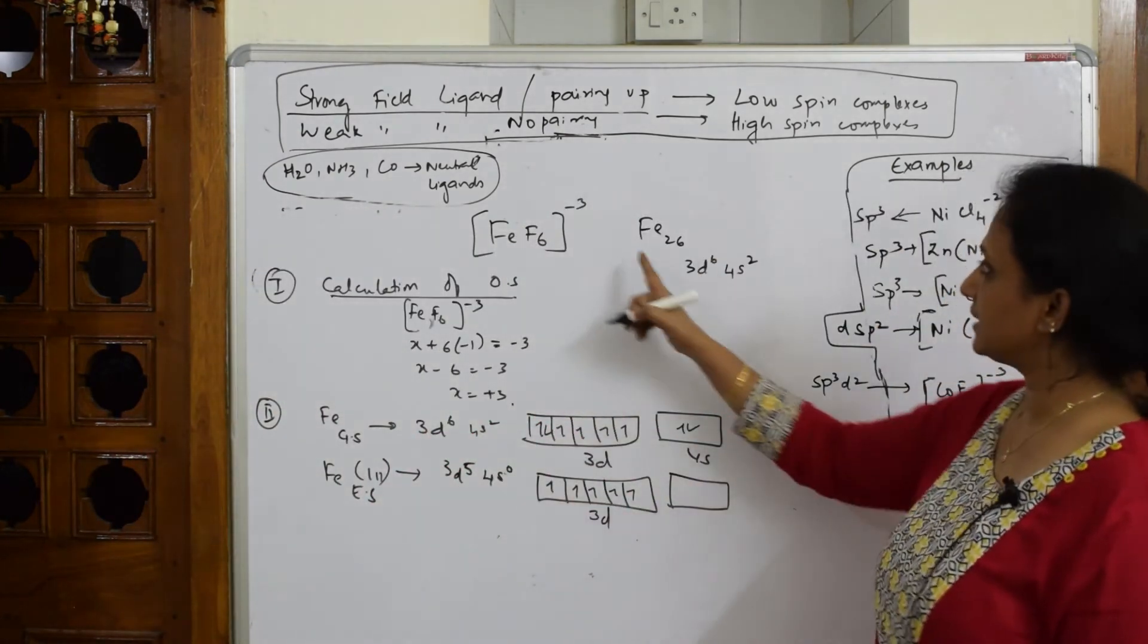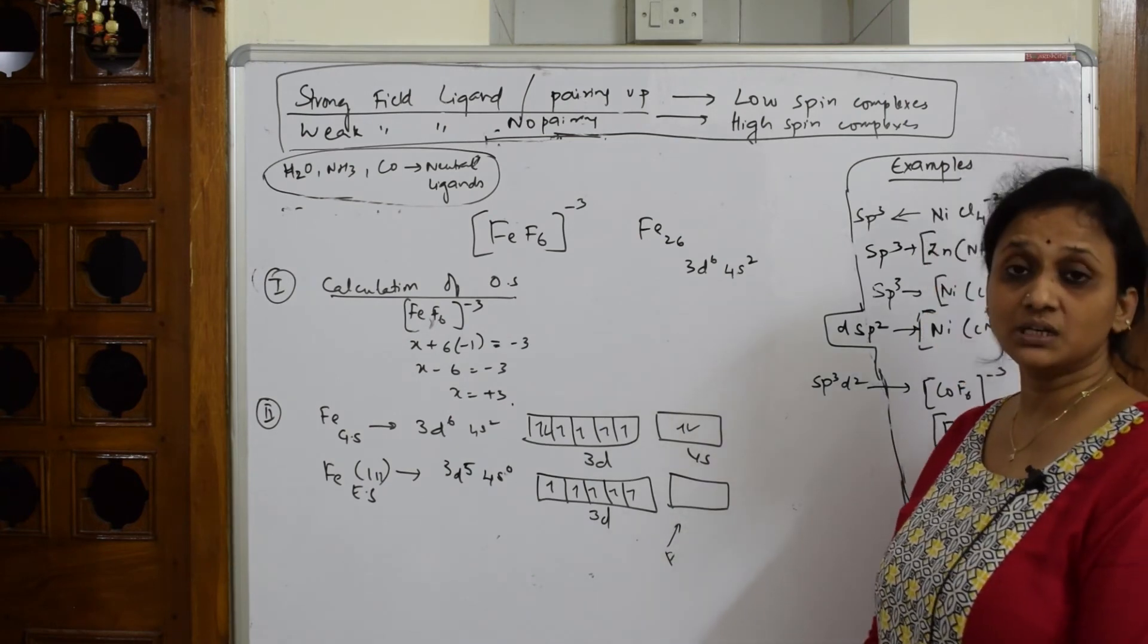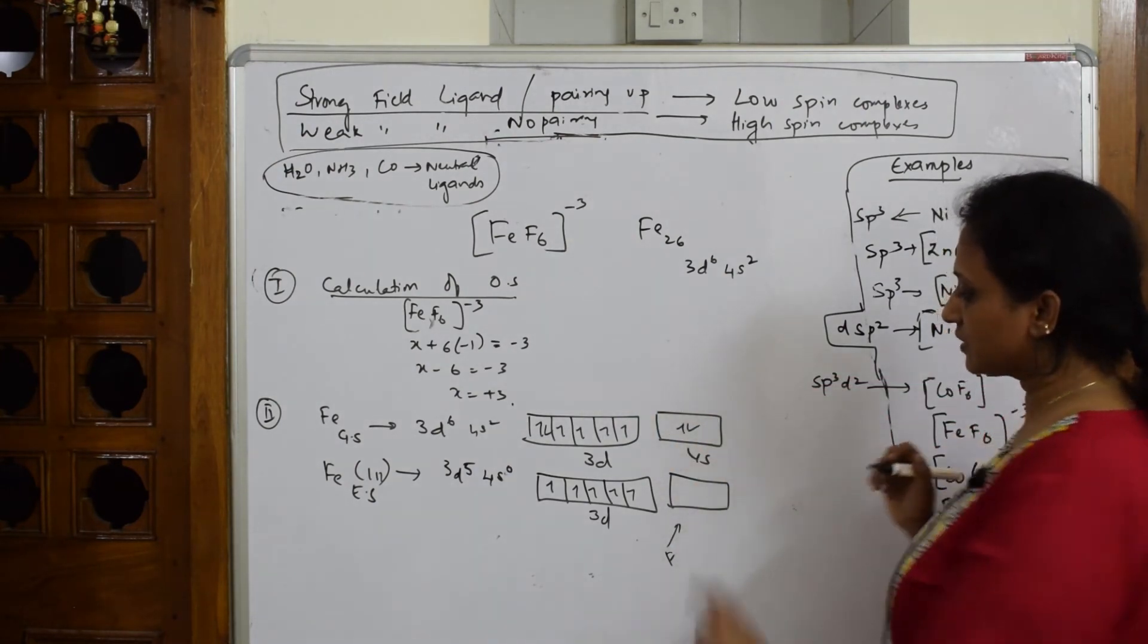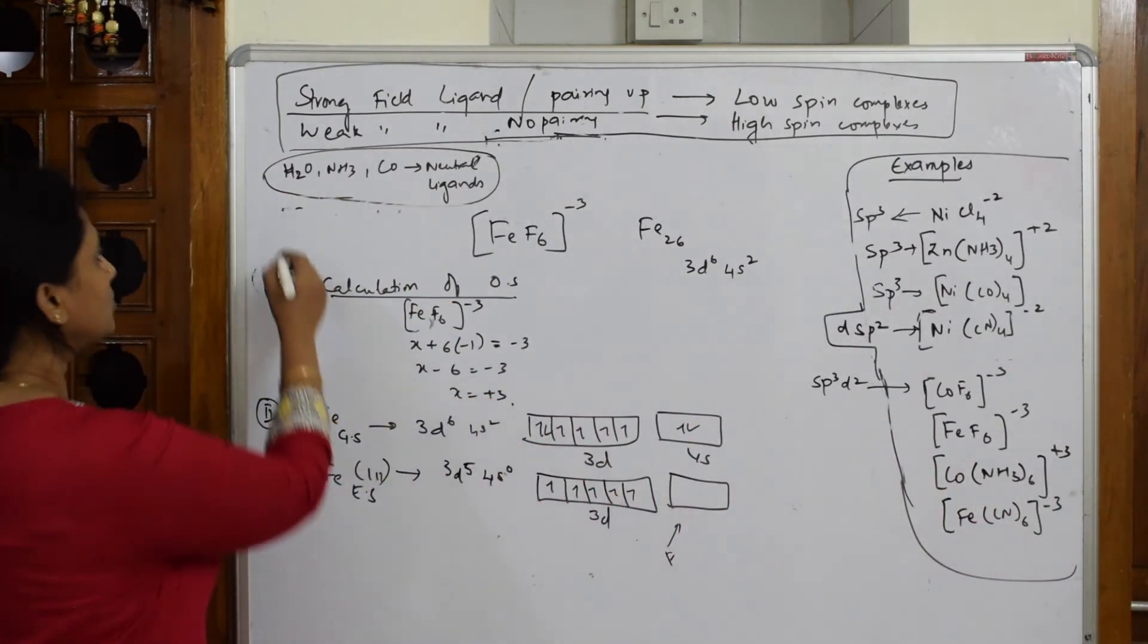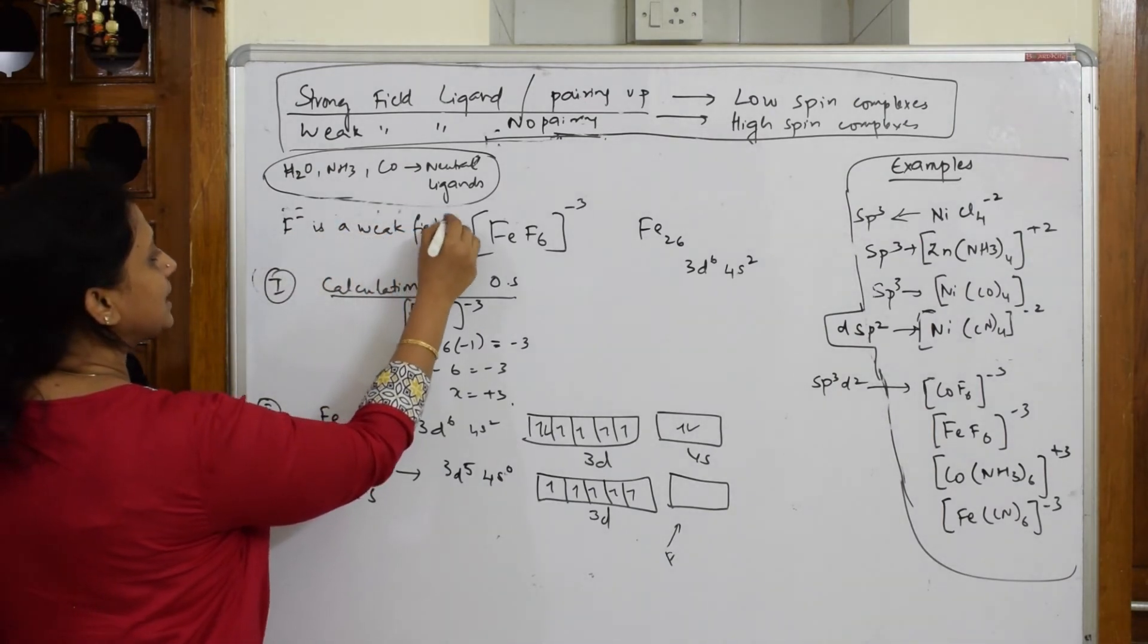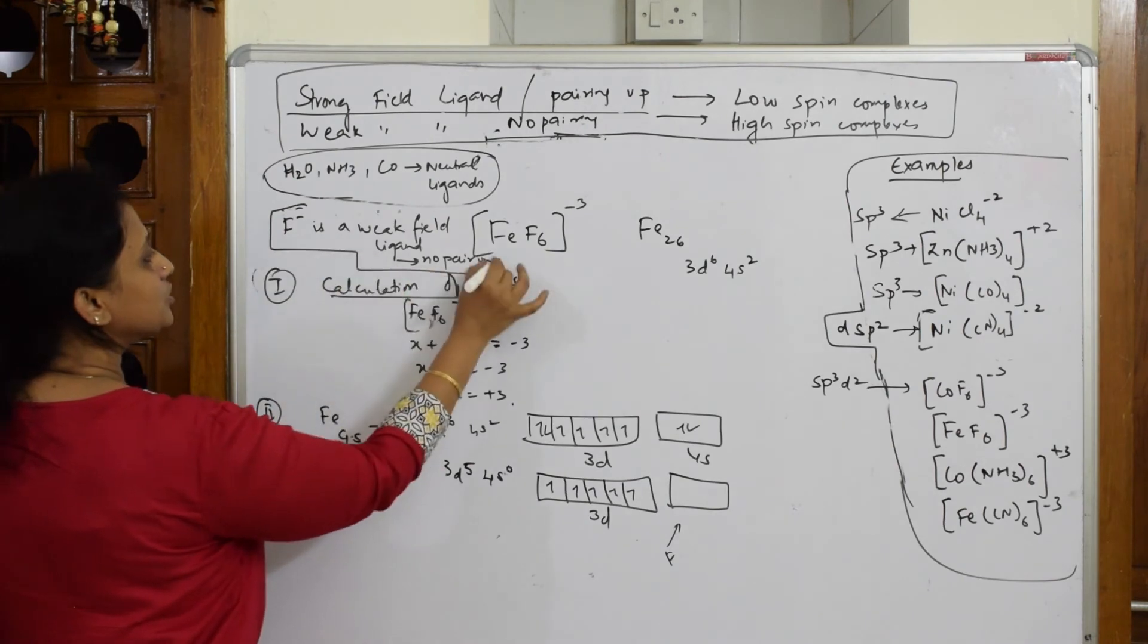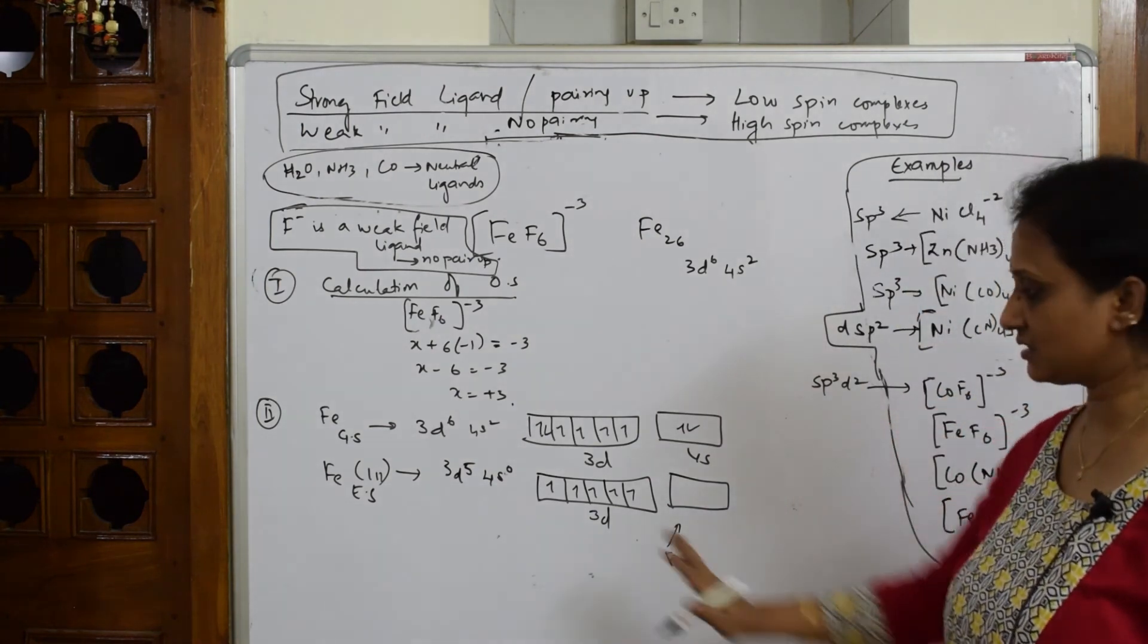Now your ligand, that is your fluorine, starts. It comes in, tries to donate its lone pair so that they hybridize, undergo hybridization. How many fluorines are there? There are 6. First of all, you have to see whether it should pair up or not. It will not pair up. Why? Because fluorine is a weak field ligand. Weak field ligand and no pairing up. It will not pair up. You have to be careful here. This concept you have to clear. This is weak field. It will not pair up. Nothing to do with d orbital.